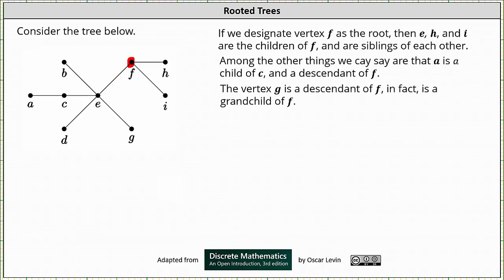Next, the vertex G is a descendant of F. In fact, it is a grandchild of F. Here we have vertex G and vertex F. If we draw the path back to the root F, because the path ends at F, the root, G is a descendant of F and F is an ancestor of G. Notice that G is the child of the child of F, which indicates G is the grandchild of F.